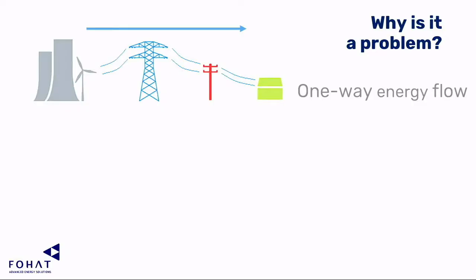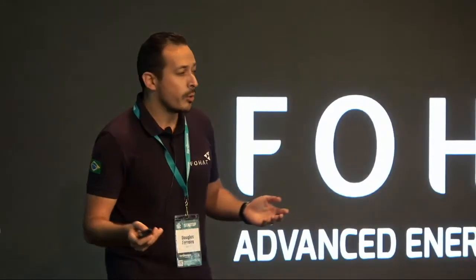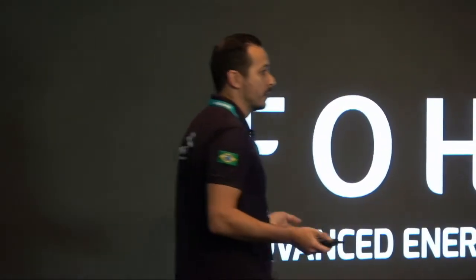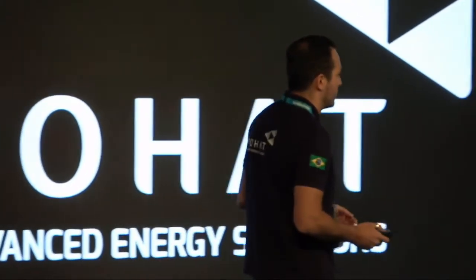Let me explain why. This system was designed a hundred years ago or more, and the energy is supposed to be flowing in one-way direction, from large power plants all the way through wires until your house. This has worked quite well until a few years ago, but now people are starting to generate their own energy, and this has started to create a problem.